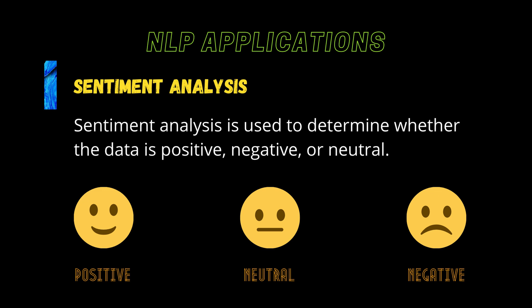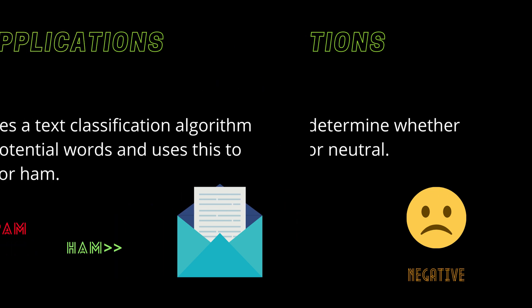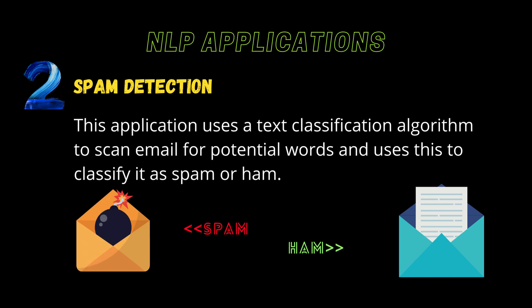Spam Detection: Spam detection technologies use NLP's text classification algorithms to scan emails for potential language that often indicates spam or phishing. These can include overused financial terms, bad grammar, misspelled names, inappropriate urgency, and more.